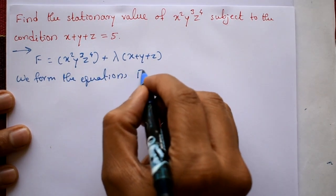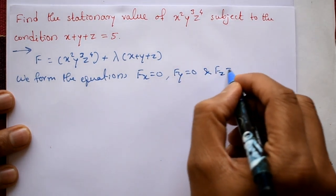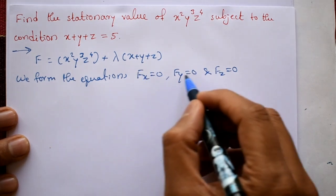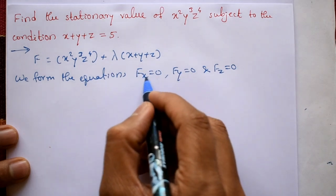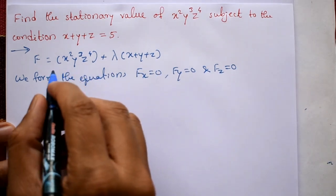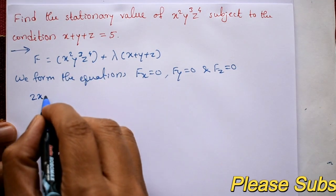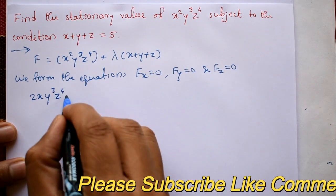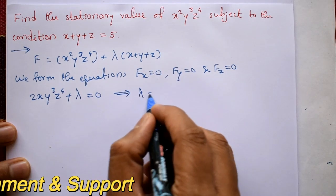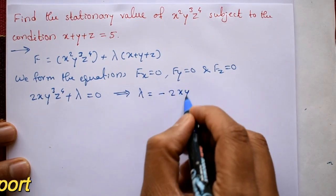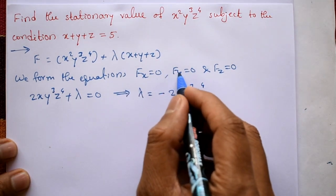We form the equations: ∂F/∂x = 0, ∂F/∂y = 0, and ∂F/∂z = 0, differentiating partially with respect to x, y, z. For the first one, ∂F/∂x = 0: differentiating with respect to x, y and z are constant, giving 2x·y³·z⁴ plus lambda equal to 0, so lambda equals minus 2x·y³·z⁴.